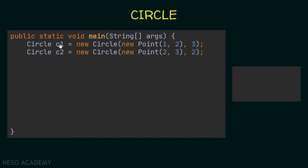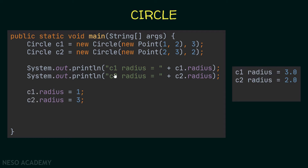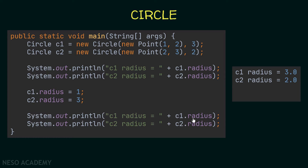First, let's look at this scenario. In the main method, I will create two circle objects c1 and c2. The center of c1 is a point with x equal to 1, y equal to 2, and radius equal to 3. The center of c2 is a point with x equal to 2, y equal to 3, and radius equal to 2. I will then print the radius of c1 and c2, make changes assigning c1's radius to 1 and c2's radius to 3, and print again.